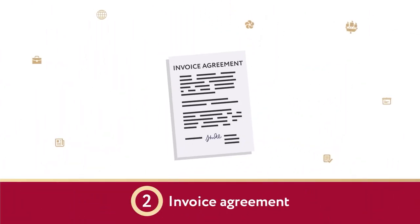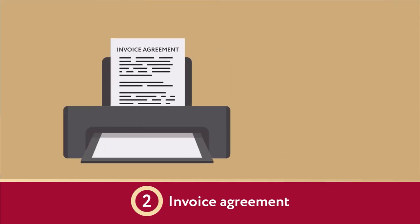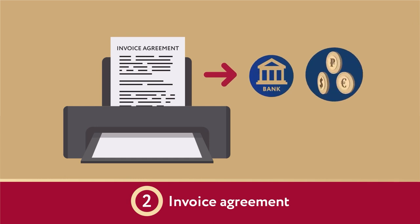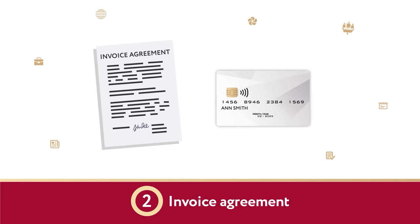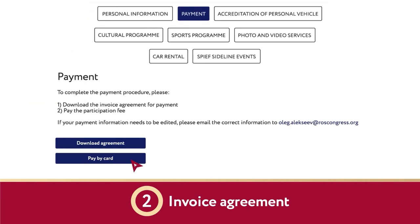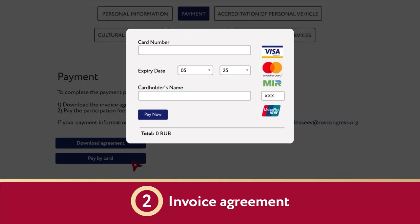An invoice-agreement combines an agreement and a payment invoice in a single form. Download and print the invoice-agreement, then make the payment at the bank if you have chosen payment by invoice. If you have chosen to pay by bank card, click the Pay by Card button, enter your card details, and make the payment.